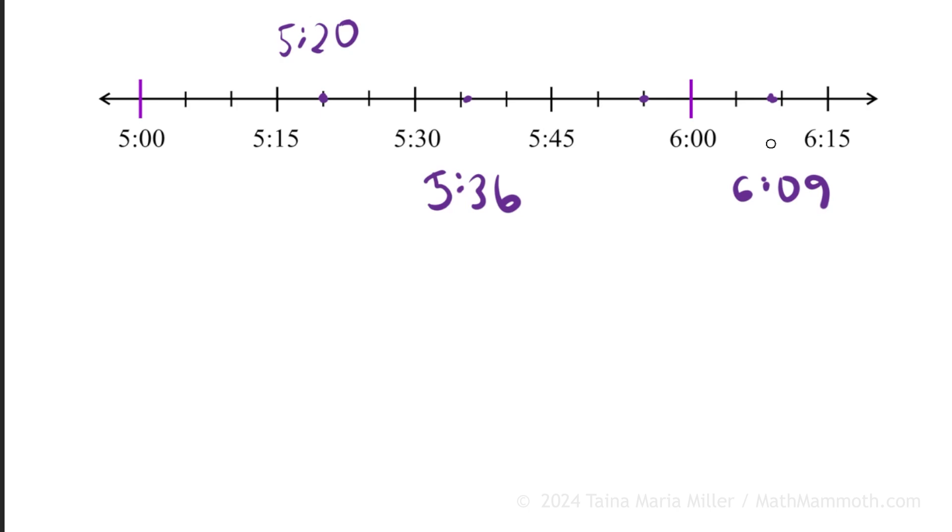And now we will use the number line to find the elapsed time between those two. How much time passes from 5:36 till 6:09? From here till here, that distance or interval.